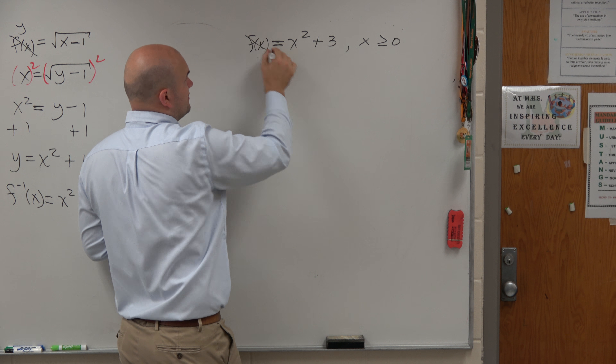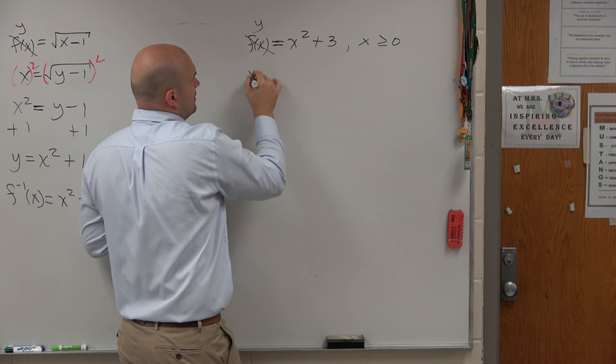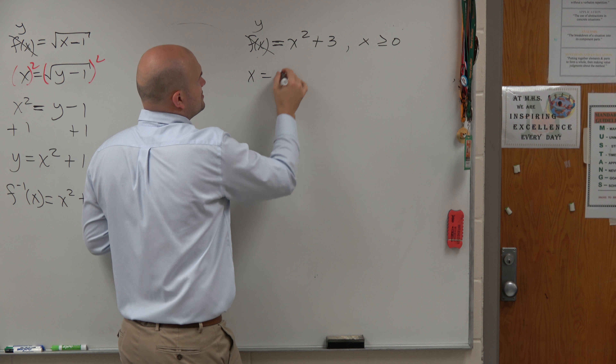Let's look at this next restriction. Forget about the restriction for a second — let's just go back to what we have. Place out the y: x equals y squared plus 3.